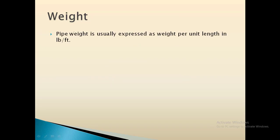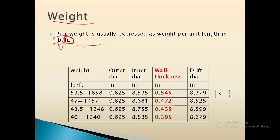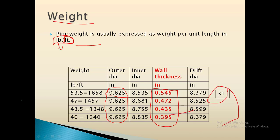Pipe weight is usually expressed as weight per unit length in terms of lb per feet. For example, if we have a pipe of 9.625-inch outer diameter, the inner pipe diameter and wall thickness may change. The weight of a pipe is directly proportional to the wall thickness. If the length of a pipe is 31 feet and the weight per foot is 53.5 lb/ft, that gives 1658 lbs for one pipe. As the thickness decreases, the weight of a pipe also decreases.